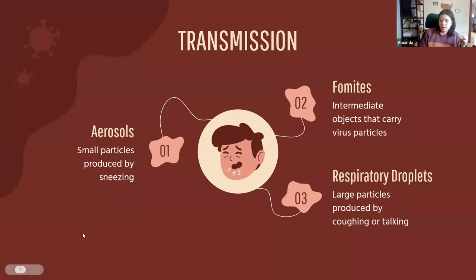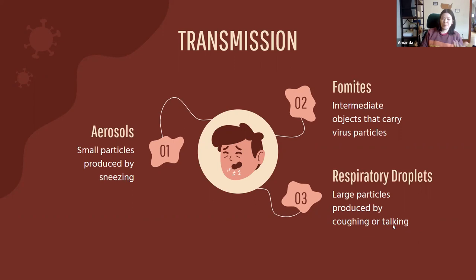Flu is transmitted by three different mechanisms. Aerosols and respiratory droplets you're probably familiar with from COVID-19 discussions. Aerosols are very small, usually produced by sneezing, and linger in the air for a long time. Respiratory droplets are essentially spit expelled when coughing or talking — larger and heavier, they don't linger as long. Fomites are intermediate objects that can carry virus particles on surfaces and transmit the virus to someone else.